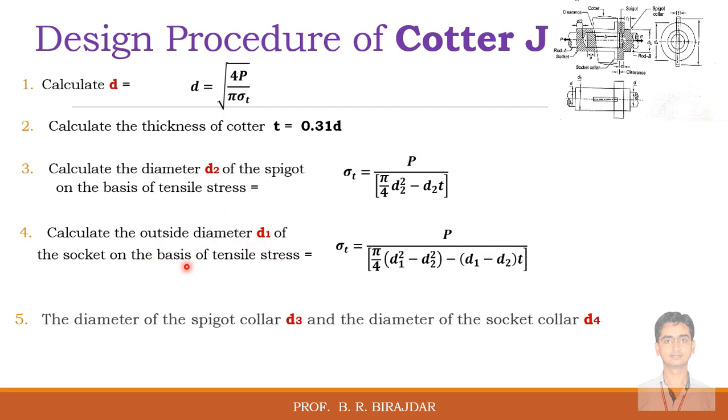Then the diameter of the spigot collar and the diameter of the socket collar, that is d3 and d4, these we will calculate from the empirical relation. So d3 is equal to 1.5 times d and d4 is equal to 2.4 times d.